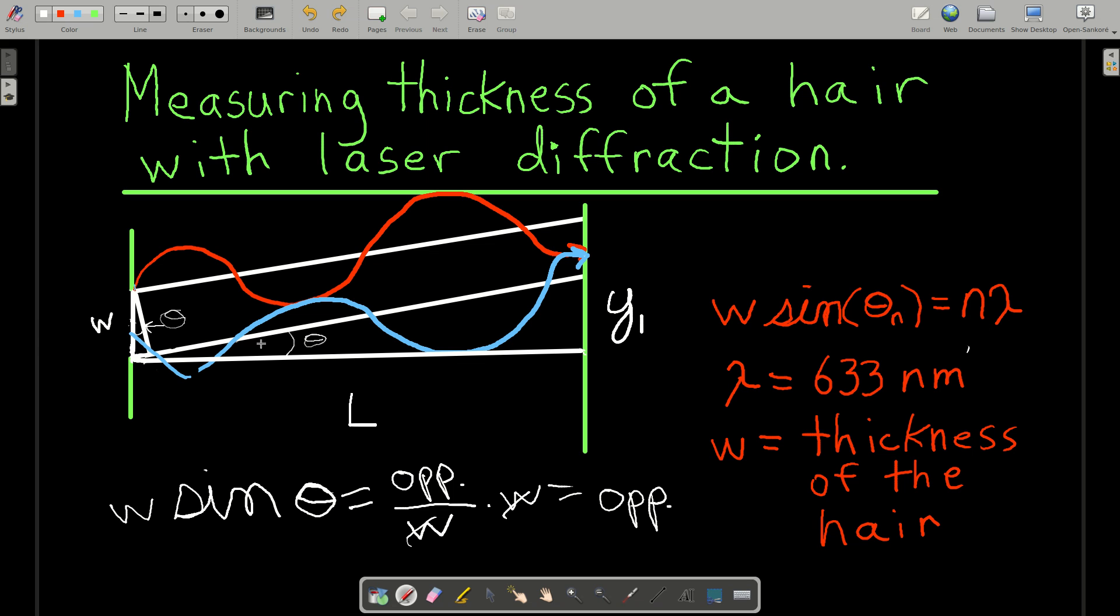You're going to get different angles, different thetas for different Ns. We're only concerned with N equals 1, N equals 2.